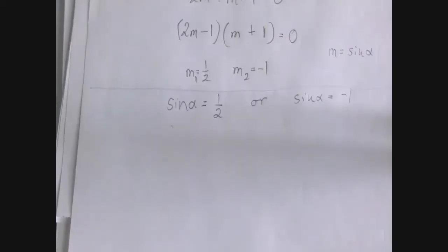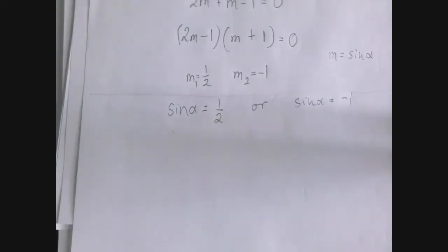This is a typical situation. Whenever we solve a quadratic equation, we could get either two or one or no solution. In this case, we got two solutions. Each of them will give rise to a basic trigonometric equation.